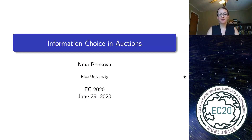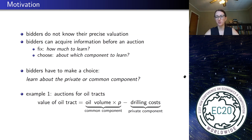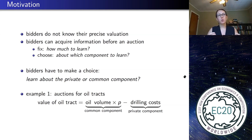Let me dive right in. Think about selling an object in an auction. In many scenarios, bidders might not precisely know how much they like the object for sale, but what they can do before the start of the auction is they can learn. You might think about this learning having two dimensions: how much information should bidders acquire, and which component of the object for sale would bidders want to learn about. This is what I'm going to focus on today.